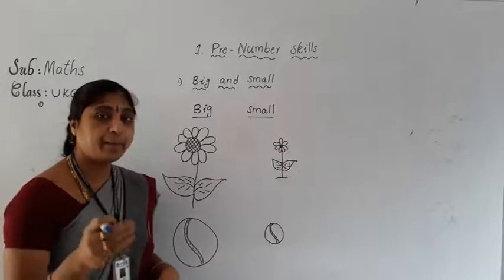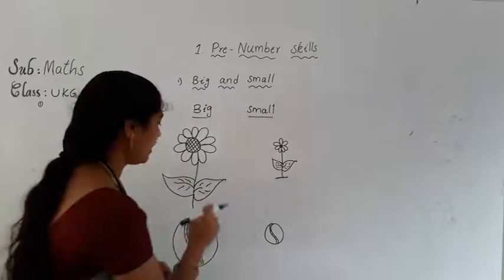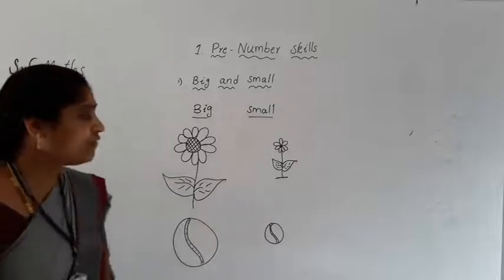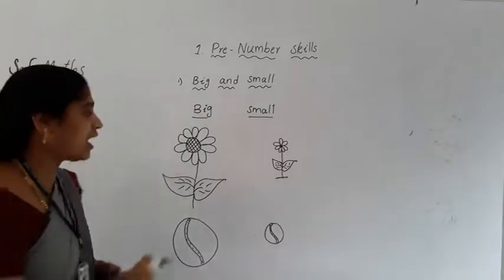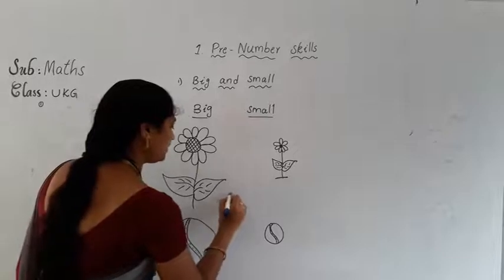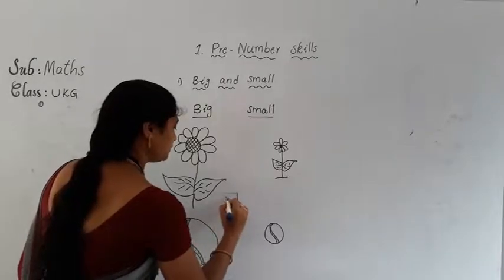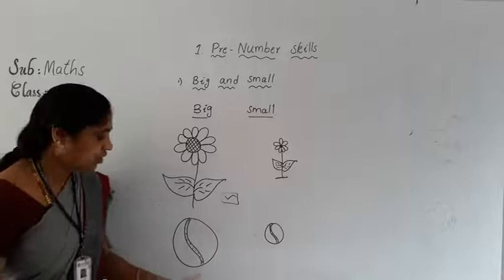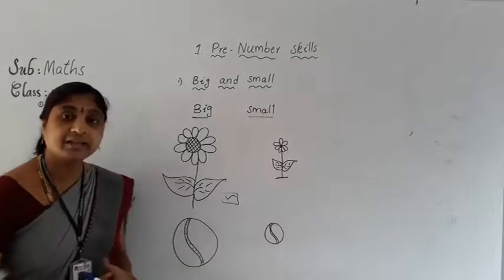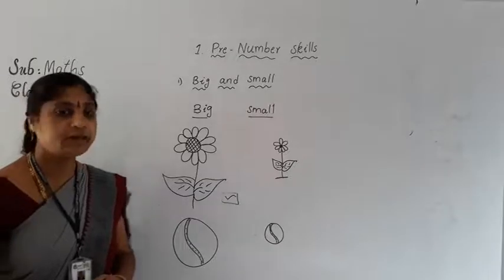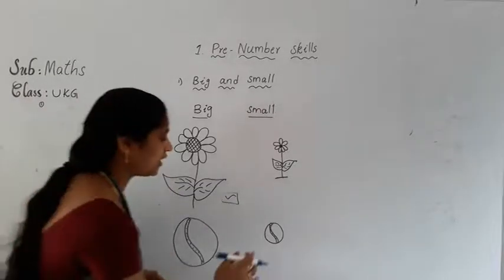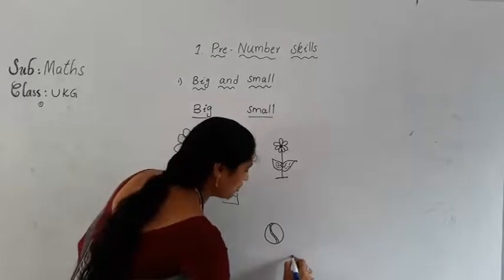Now take the bigger object. Here two flowers are there. First you take the big object — which is the big? This is the big, that's why you put a tick here. Next, these are balls. Now the question: tick the smaller object. Tell me which one is the smaller? This one is the smaller — you tick it.